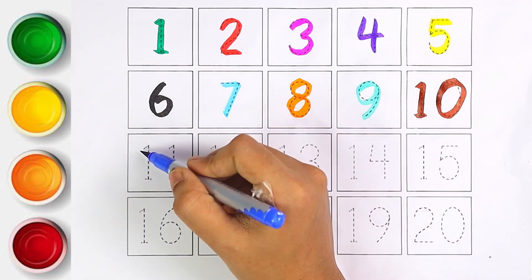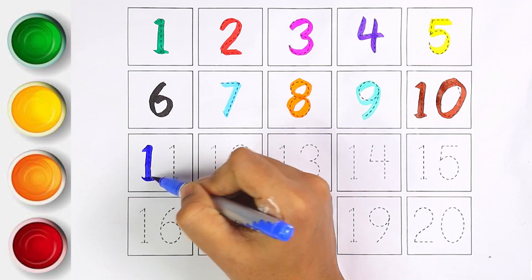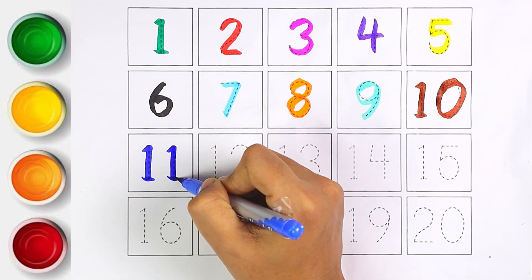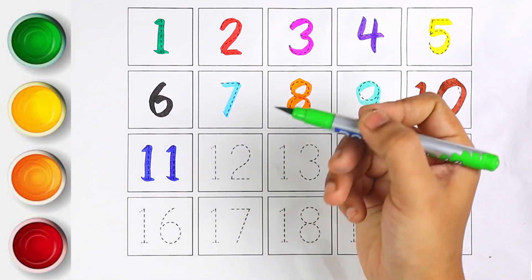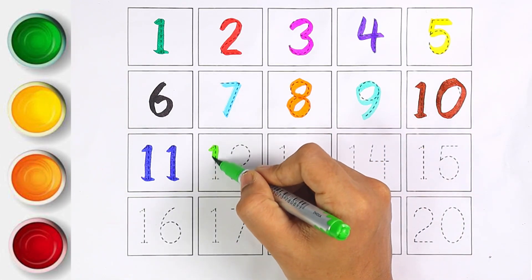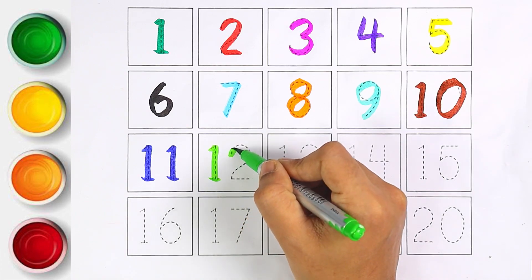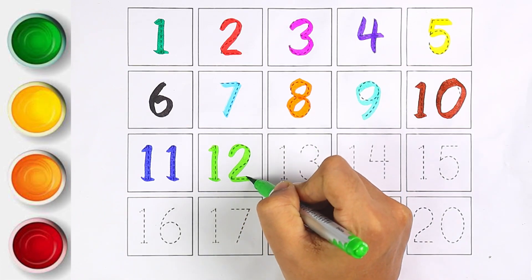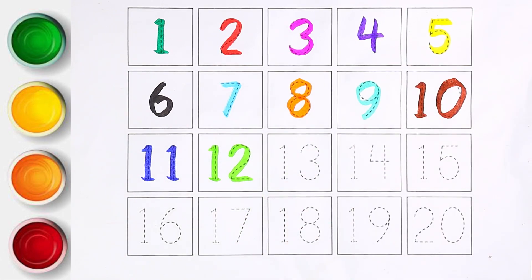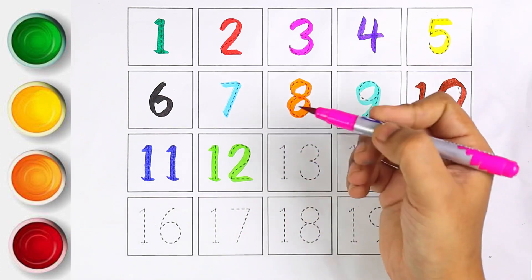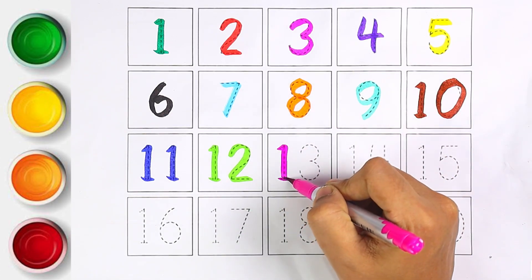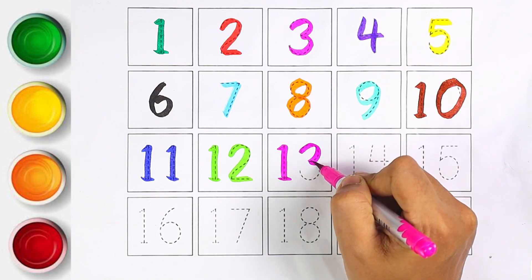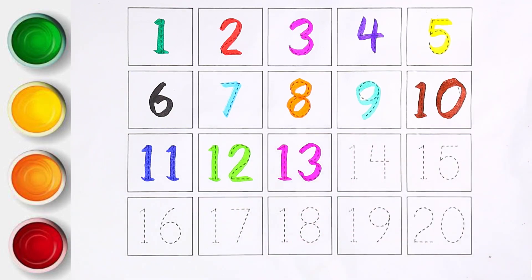Blue color — number eleven. One and one makes the number eleven. Next number is twelve — I am writing number twelve with light green color. Pink color — number thirteen. One and three makes the number thirteen.